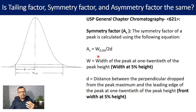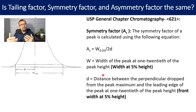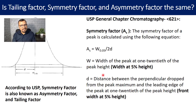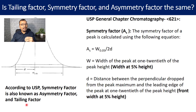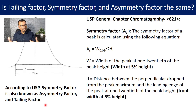The symmetry factor is calculated using this formula. When you look further into General Chapter 621, you will find that the symmetry factor is also known as asymmetry factor and tailing factor. This means that USP does not differentiate between symmetry factor, asymmetry factor, and tailing factor — whether you call it tailing factor, symmetry factor, or asymmetry factor, according to USP, it is one and the same.